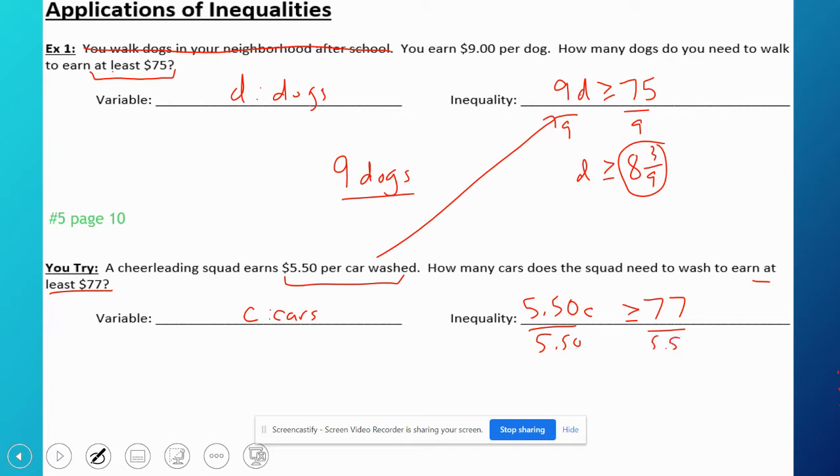And round up to the nearest whole car, because again you can't stop washing a car in the middle of the car, so your answer has to make sense. It goes in 15 something with some extra stuff left over, so I'm going to have to wash 16 cars.